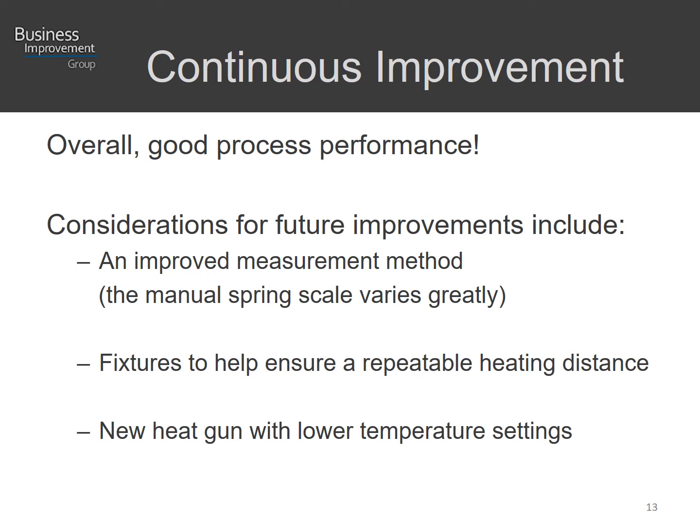This leads to the point of continuous improvement, which all companies should strive for. Overall it was good performance. Considerations for future improvements include an improved measurement method — the manual spring scale method demonstrated quite a bit of variation — fixturing to help ensure repeatable heating distance, and potentially a heat gun with lower temperature settings, since lower temperature was shown to be better but this heat gun had a minimum setting of 250 degrees. It should be noted this was a worked example, not necessarily a specific application, but very indicative of some processes our clients use.